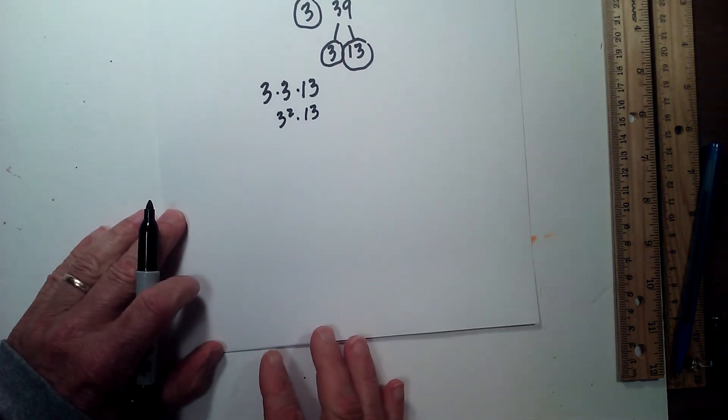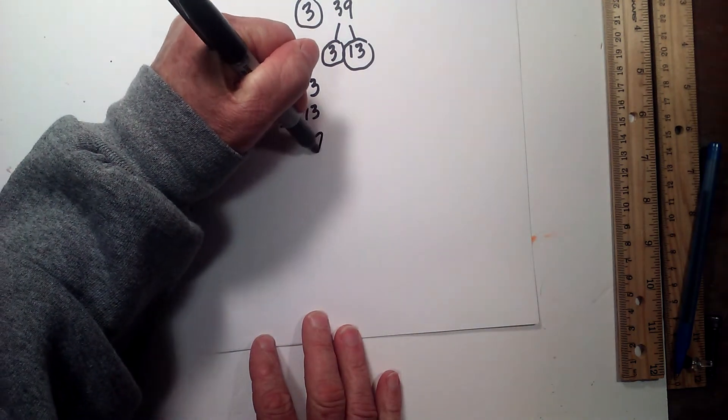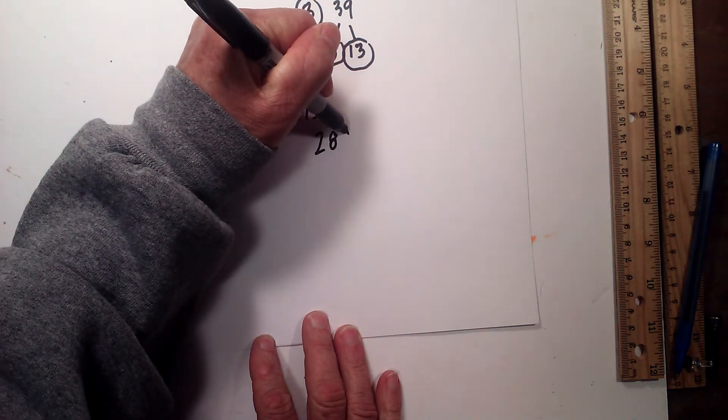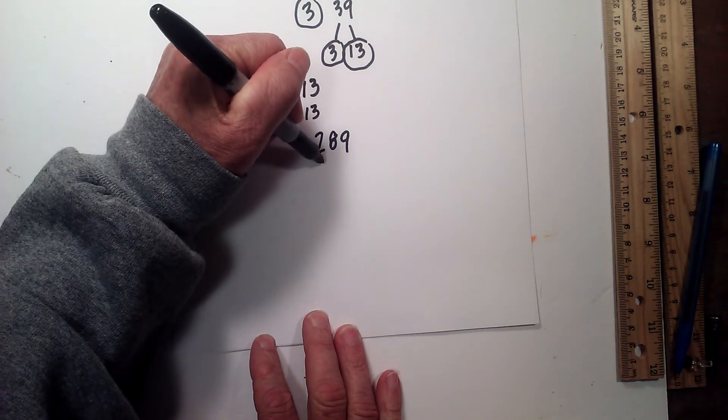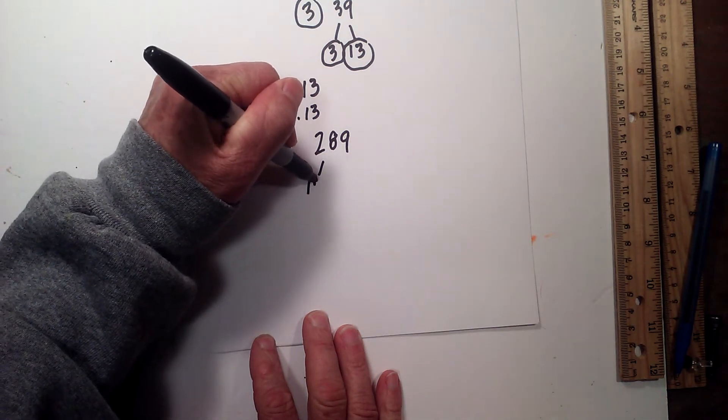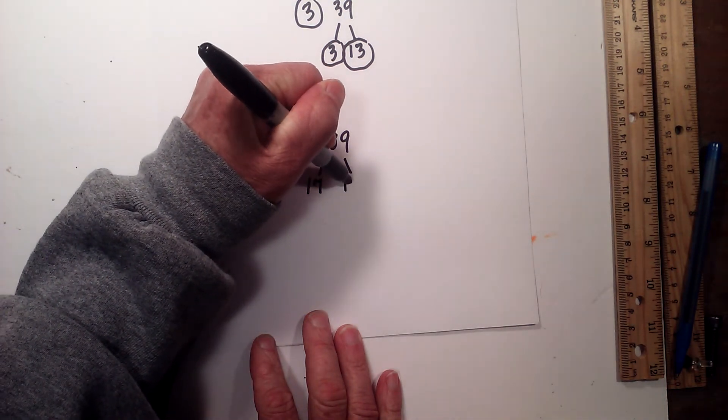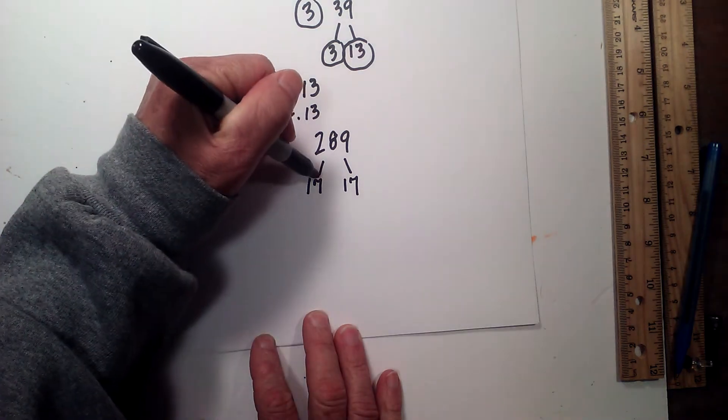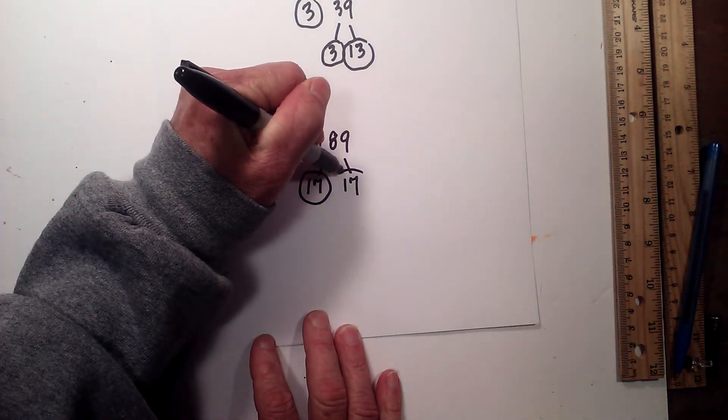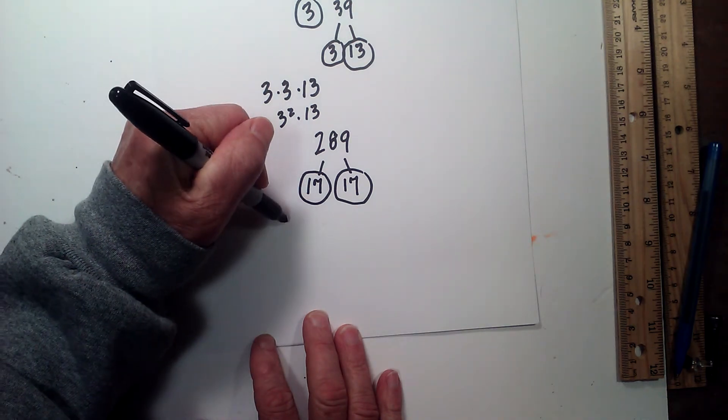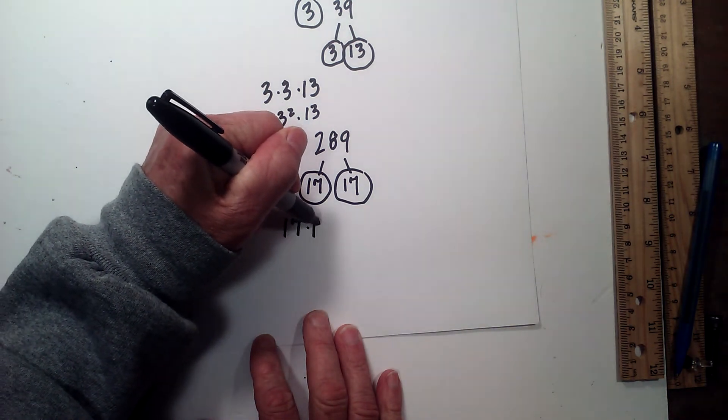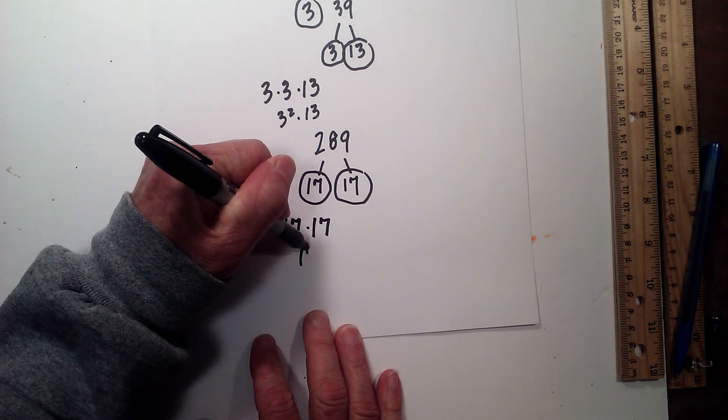Now let's move it up and let's go with 289. Let's create another factor tree and this one is fairly easy. For me, 289 is 17 times 17 equals 289. I will circle both of them because they are both prime. So the prime factorization is 17 times 17, or 17 squared.